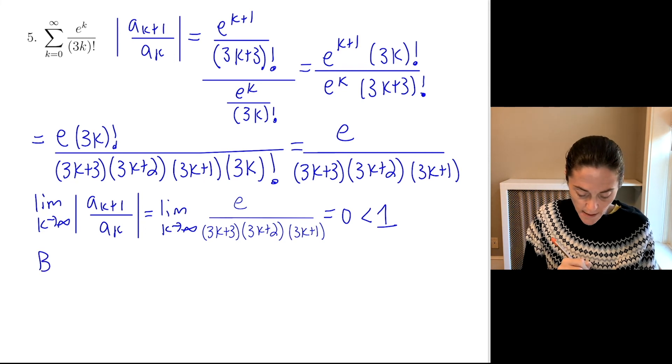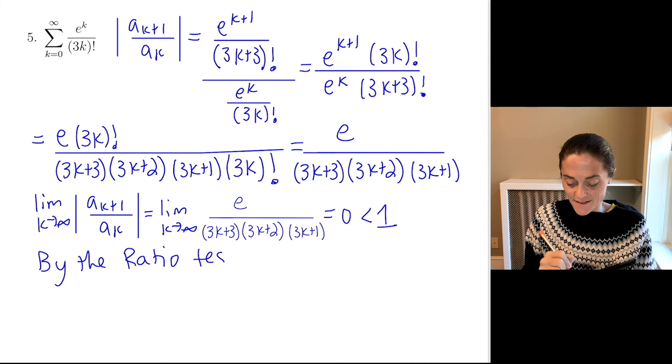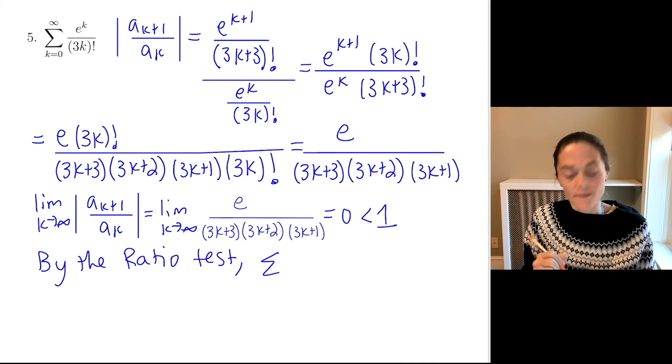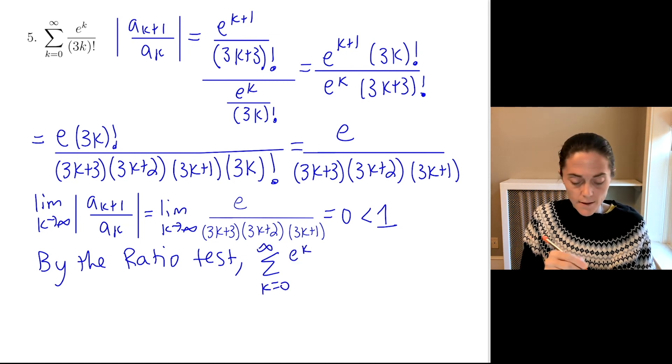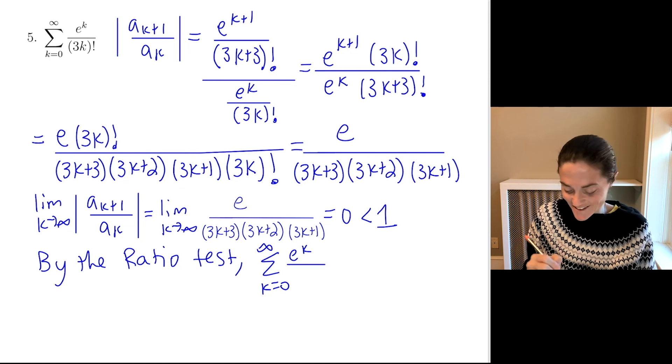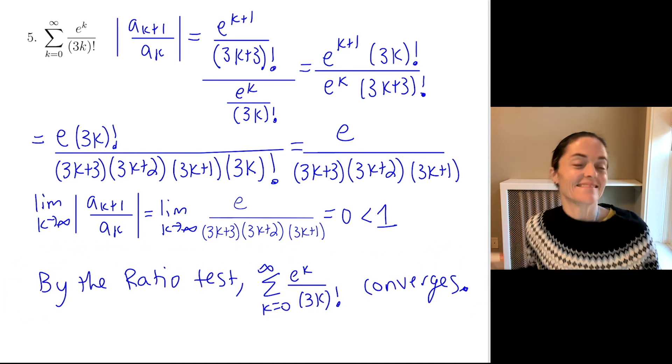So we quote the test. By the ratio test, my series, which is the sum k equals 0 to infinity of e to the k over 3k factorial, converges. Just like this.